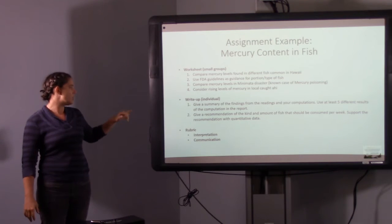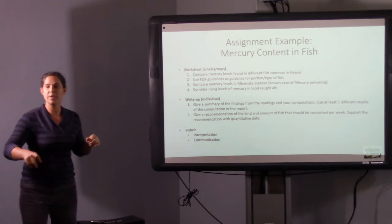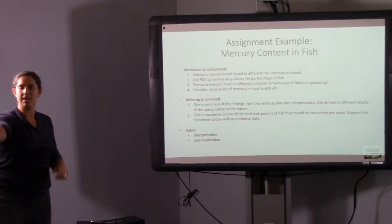I asked them to give a summary of the findings from what they did, and use at least five different particular computations. So five different numbers in the text of what they presented. It was a one-page summary. Some picked up on different parts of what they wanted to explain. And then I asked them to give a recommendation: How much fish do you think people should be eating? And support it with quantitative data. So here I want them to be looking at interpretation and communication.